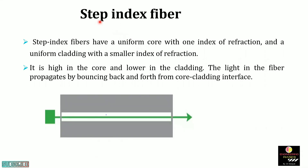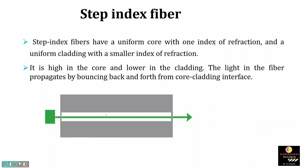On the basis of refractive index, there are two types: step index and graded index. Step index is further divided into two types: single mode and multi-mode. In step index fibre, while moving from the center axis of the core to the core-cladding interface, the refractive index is uniform. The core refractive index is uniform and the cladding refractive index is also uniform — this sharp change is what gives it the name step index.